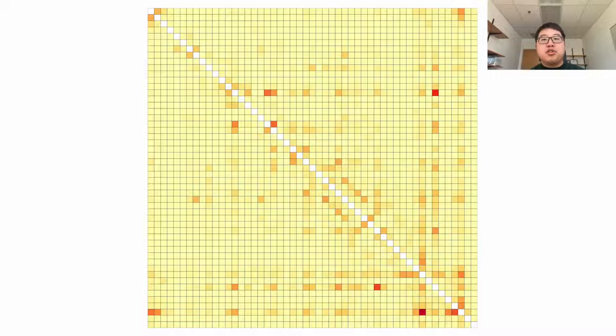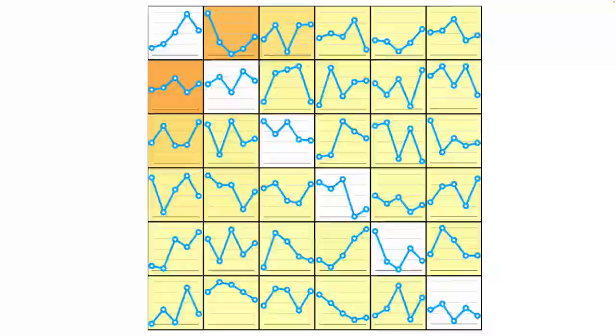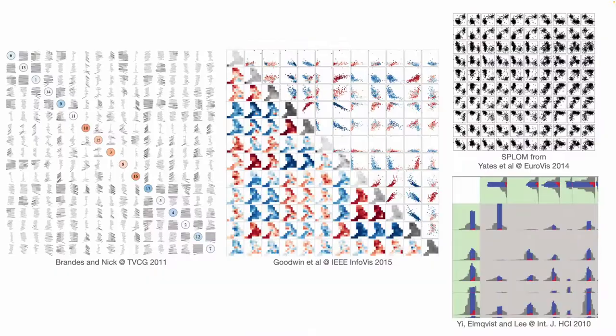The most straightforward way is to embed a visualization in each cell. Let us zoom in to see how it looks like. Here, we are using a line chart as an example. We are not the first one doing this. People have put different types of visualizations into matrix cells, and embedding charts into every single cell works well for relatively small matrices.